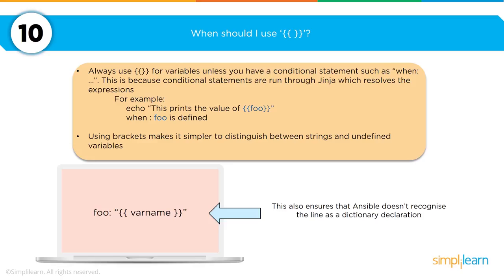When working with Ansible, you'll be asked: when should you use curly brackets (also referred to as french brackets)? The answer comes down to two things: first, they make it easier to distinguish strings and undefined variables; second, they are used for putting together conditional statements when using variables. For example, to print the value of `foo`, you put in the variable conditional statement where `foo` is defined as something.